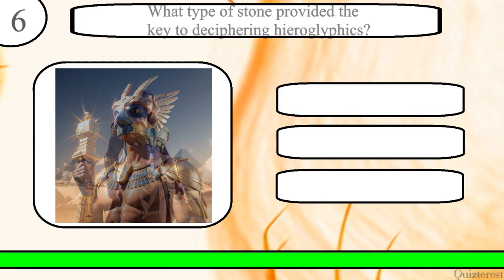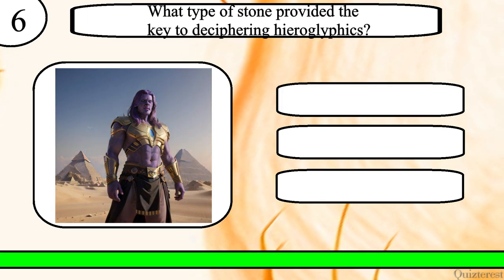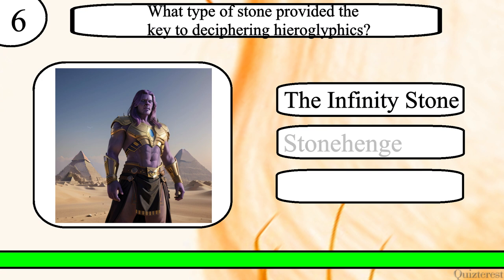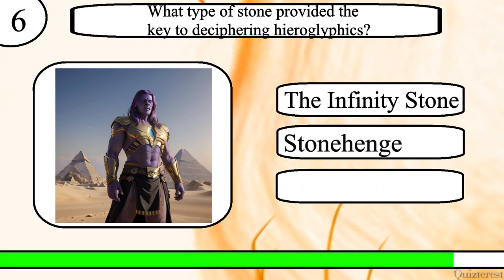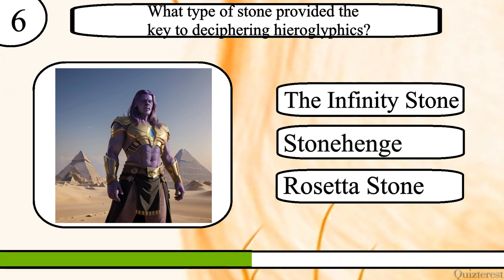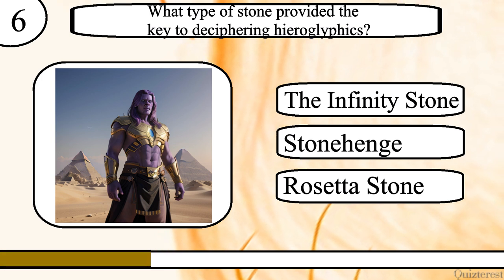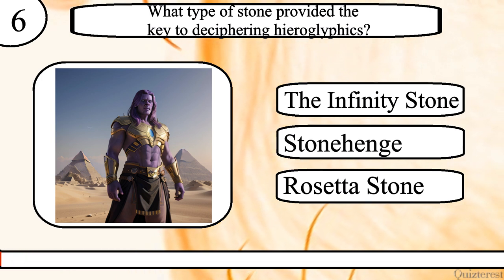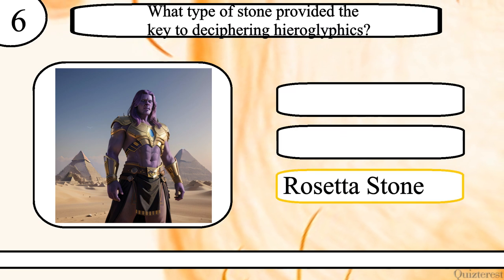Question 6. What type of stone provided the key to deciphering hieroglyphics? The infinity stone, Stonehenge or Rosetta Stone? The correct answer is Rosetta Stone.